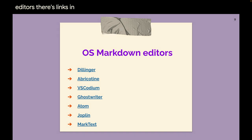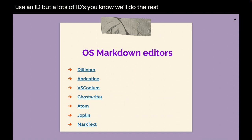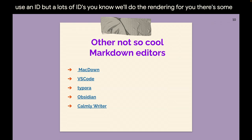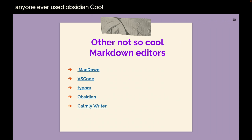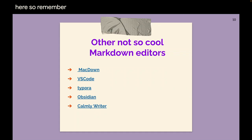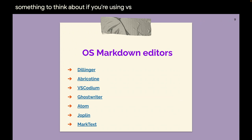For open source editors, there are links in the slides. My favorite is Dillinger — that's a pretty nice Markdown editor. I'm not a developer, so I don't use an IDE, but there are lots of IDEs that will do the rendering for you. There's also Obsidian, which is really cool — has anyone ever used Obsidian? There's no open source equivalent to Obsidian. Notice that VS Code is not open source, but VS Codium is — something to think about if you're using VS Code, as they do track you.